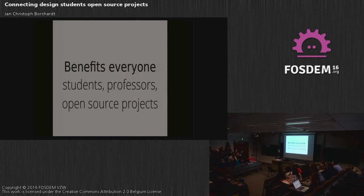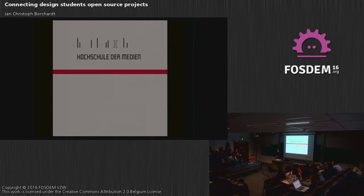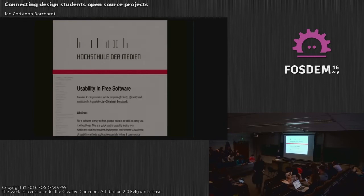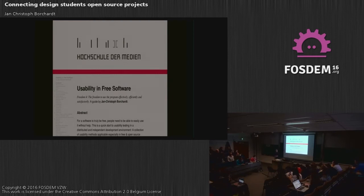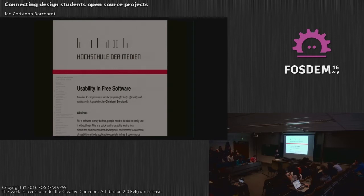The Hochschule der Medien is the media university in Stuttgart, where I studied myself. What I did there first was my thesis about usability and free software. After I graduated, we had a course called Usability Engineering Methods, where you basically learned about different usability engineering methods — card sorting, focus groups, usability testing, and about ten different methods in total. You could choose the project you wanted to work on yourself, and were assigned a method, with groups of two or three. My group was doing usability testing, which I liked the most.